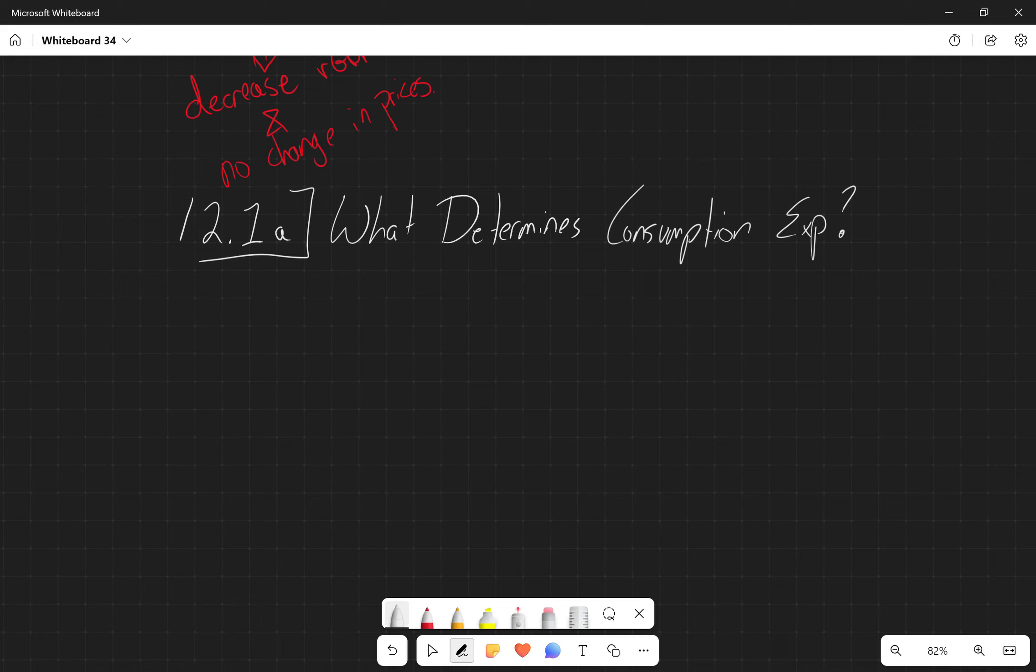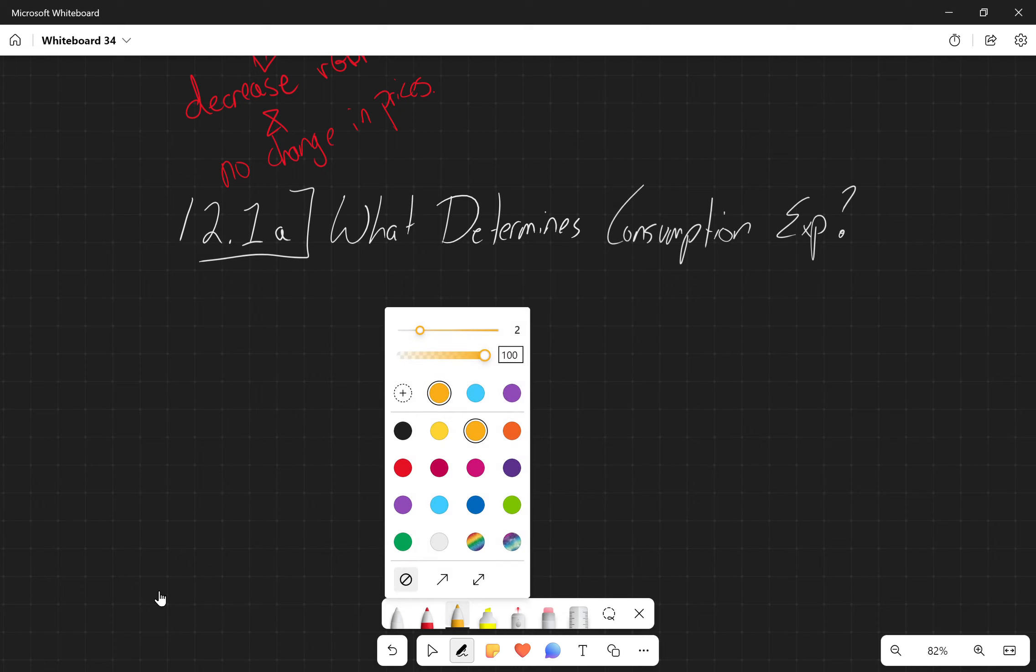Keynes was all about stimulating aggregate demand primarily through consumption spending. Keynes identified three factors that affect consumption spending, so we're going to talk about those right now.